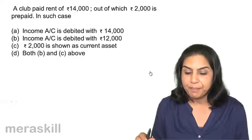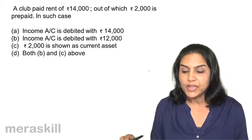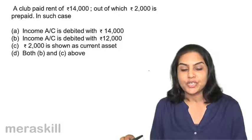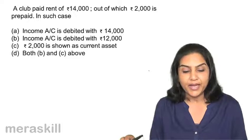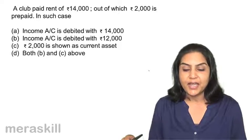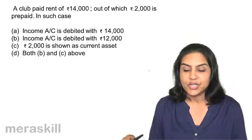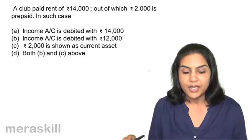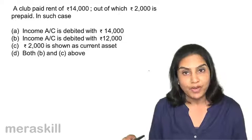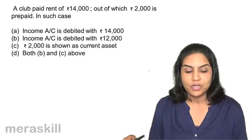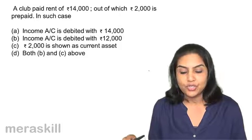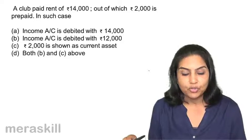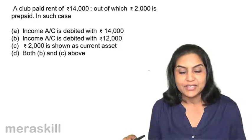A club paid rent of $14,000, out of which $2,000 is prepaid. In such a case: A. Income account is debited with $14,000. B. Income account is debited with $12,000. C. $2,000 is shown as a current asset. D. Both B and C above.